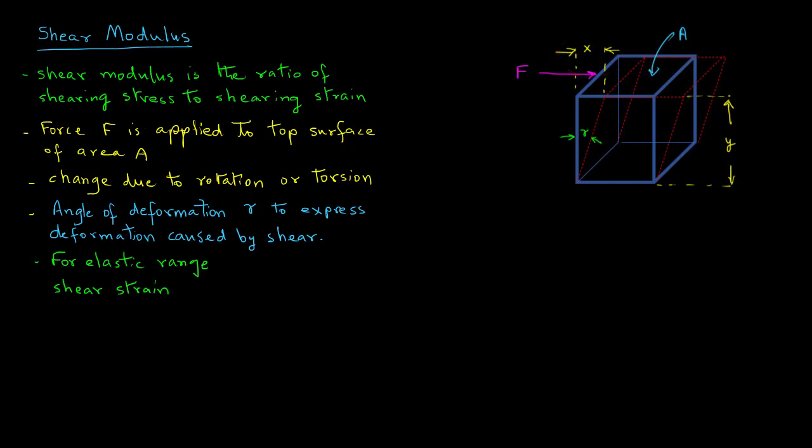So shearing strain is then expressed as the movement X of the top surface based on the height that is Y. So it is X over Y.